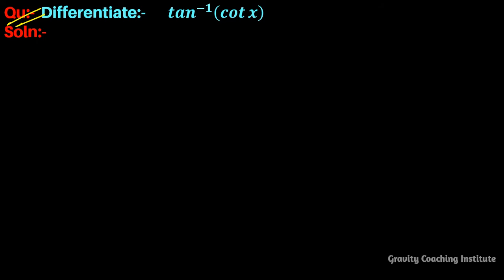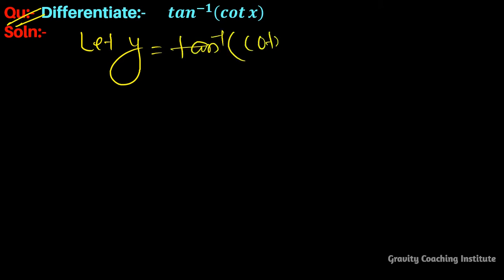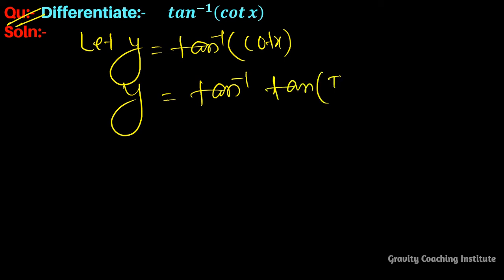Differentiate tan inverse cot x. Let y equal to tan inverse cot x. Using the identity, tan inverse cot x equals tan inverse tan(90 minus x), which simplifies to pi by 2 minus x.